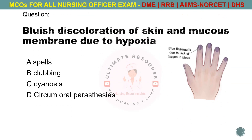Bluish discoloration of skin and mucous membrane due to hypoxia. Options are A. Spells, B. Clubbing, C. Cyanosis, D. Circumoral paresthesias. The answer is C. Cyanosis.